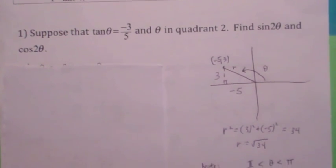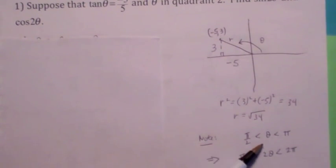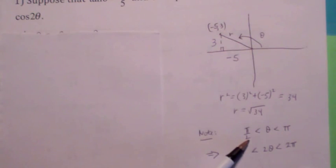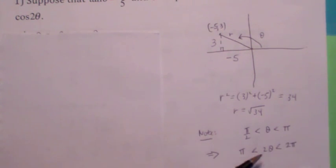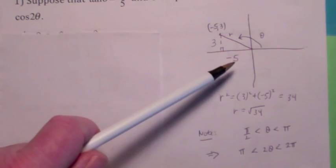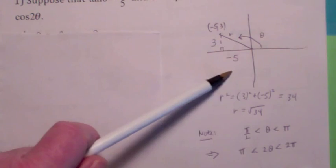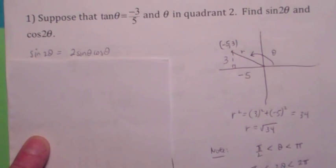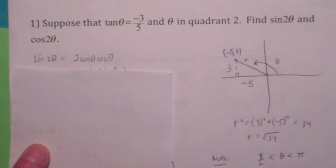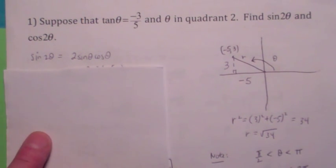If the angle is in quadrant 2, it's between pi over 2 and pi. If you double everything, that says the double angle would have to be between pi and 2 pi — meaning twice the angle is either in the third quadrant or the fourth quadrant. It turns out you don't have to worry about it because the formulas take care of the sign.